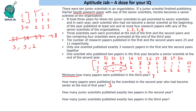How many junior scientists published exactly two papers in the second year? Only one junior scientist published exactly two papers in year two. How many junior scientists published exactly two papers in the third year? Three junior scientists published exactly two papers in the third year in order to complete their four papers and become senior scientists. That concludes the solution to this set and the answers to all the questions.